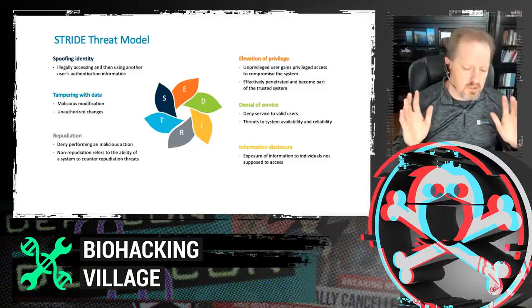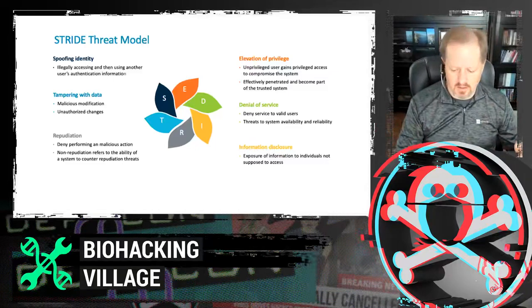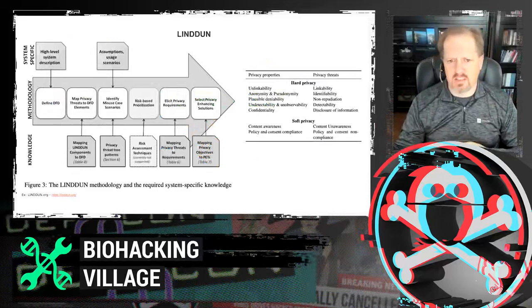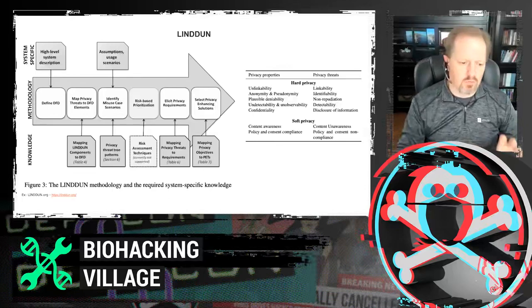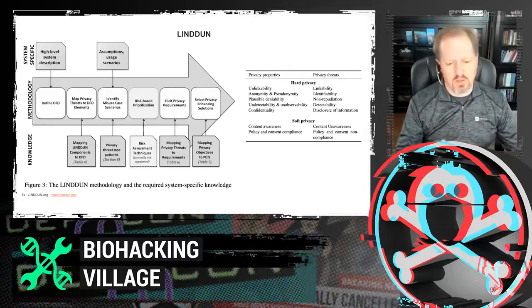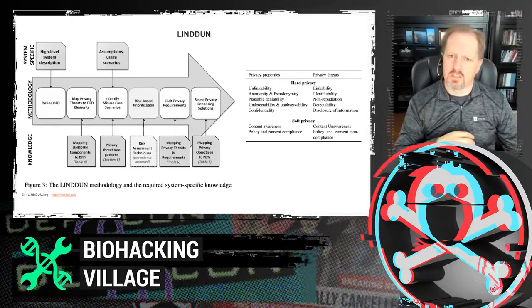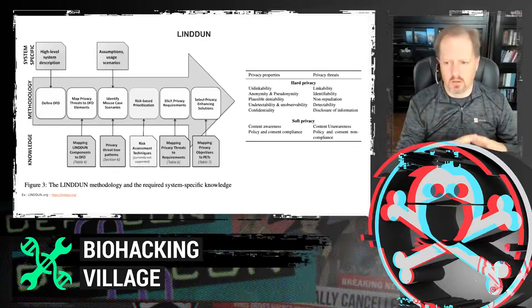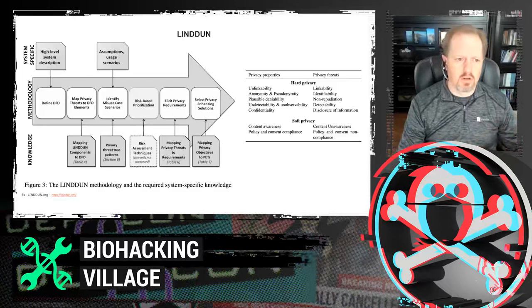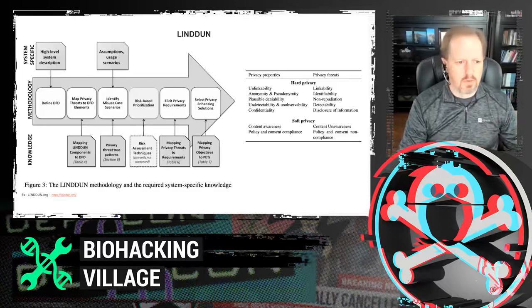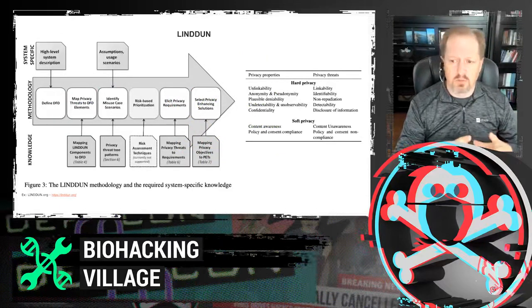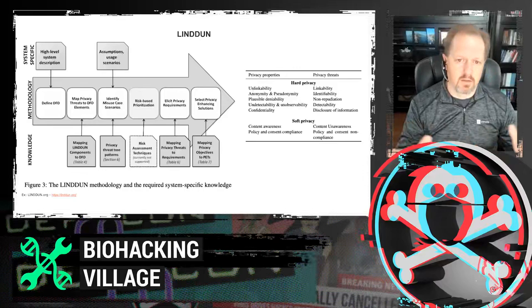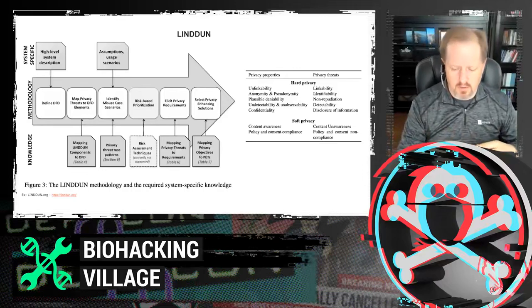On the privacy side, the LINDDUN model is also excellent. What became really apparent to us is that sometimes privacy and security are polar opposites. In the STRIDE model, we worry about repudiation — can somebody do something and deny they did it? In privacy, we worry about non-repudiation — can someone do something anonymously? We borrowed heavily from the LINDDUN model as well.